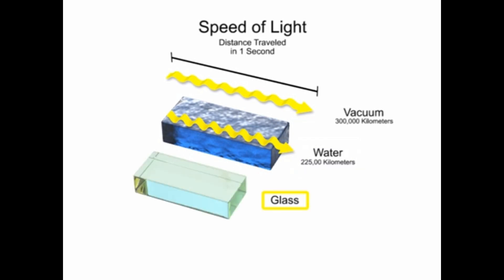In glass, light travels at 67% of its speed in a vacuum, so the light speed is 300,000 times 0.67, or about 200,000 kilometers per second.